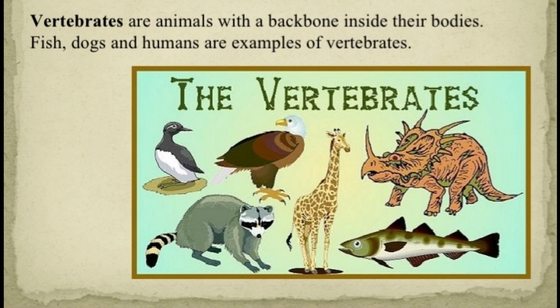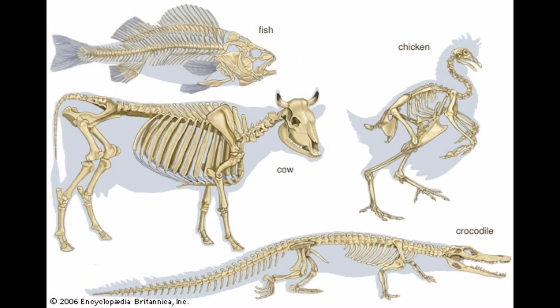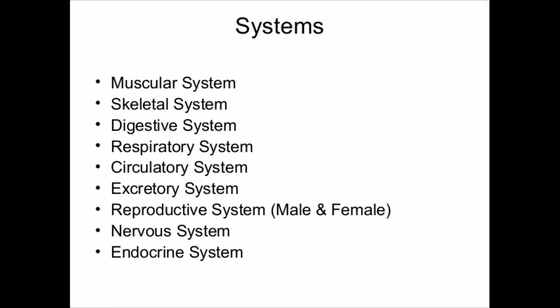Some examples of vertebrates are cow, fish, parrot, man, etc. These animals have a backbone on their body, so they are called vertebrates. Their body is well developed. They have a well developed reproductive system, nervous system, respiratory system, etc.